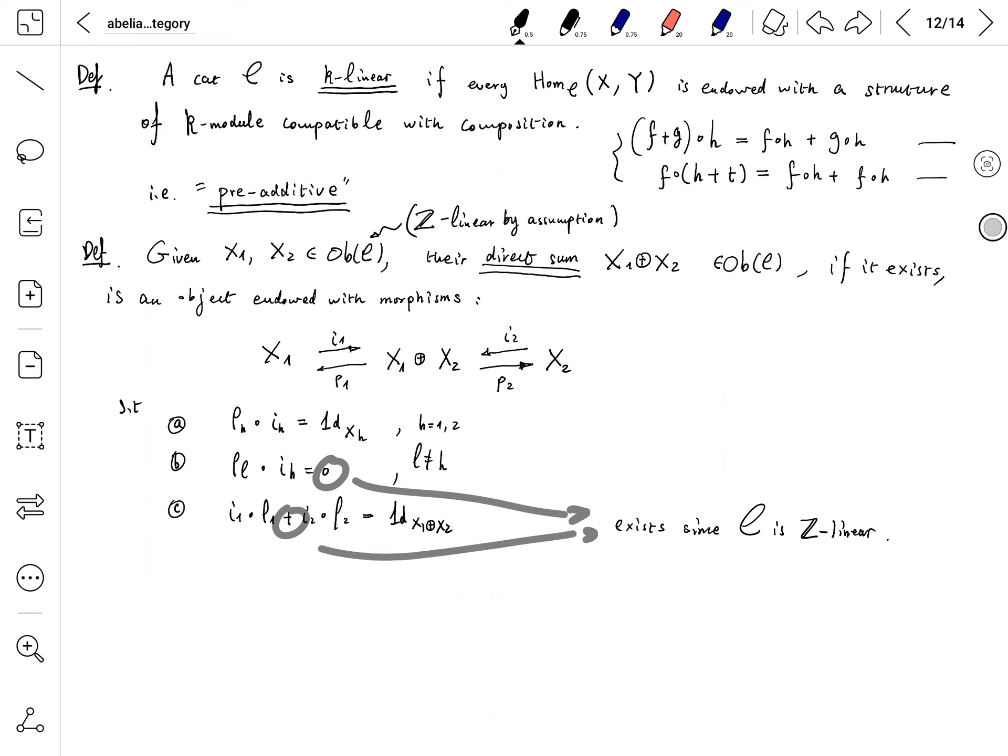PL compose IH equals 0 if L doesn't equal H, which means P1 compose I2 equals 0, and P2 compose I1 equals 0.